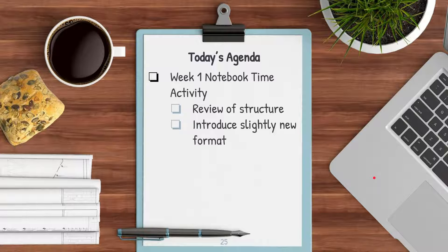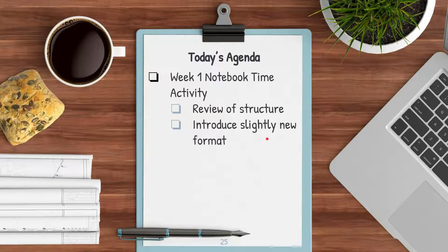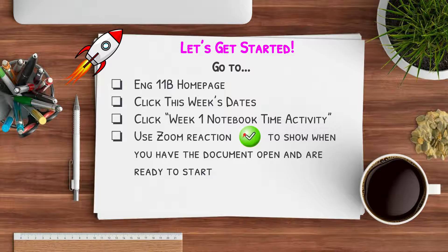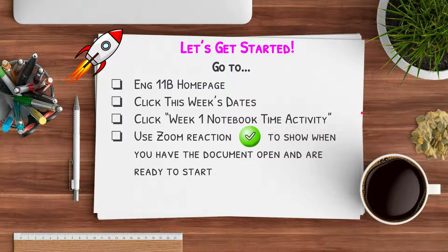Today's agenda: we're going to work on the week one notebook time activity, which will start with a review of the structure of notebook time activities and then introduce the slightly new format for this week using the mini lesson. From the English 11B home page, please click on this week's dates. On day two you should see the item that says week one notebook time activity — please go ahead and have that open.